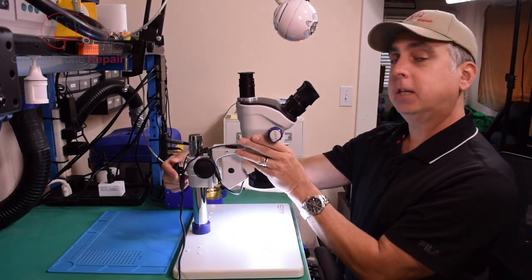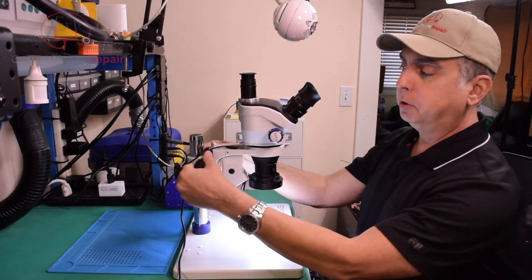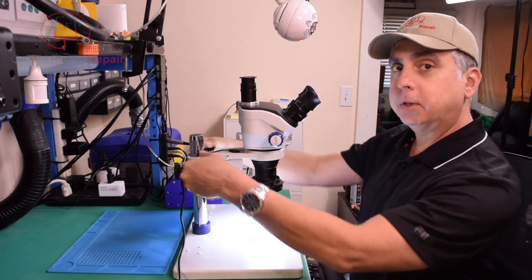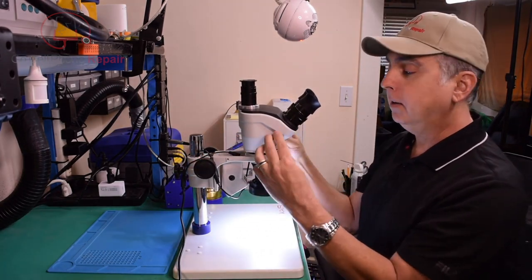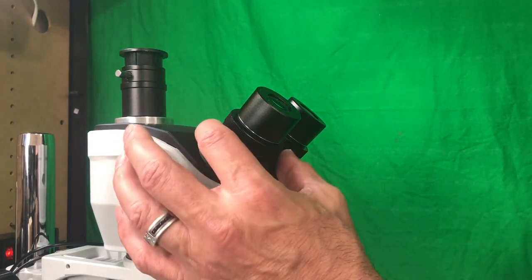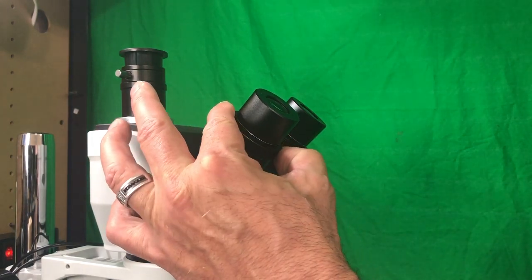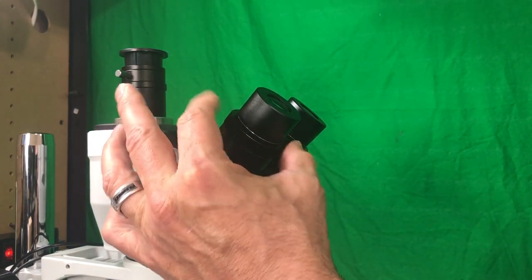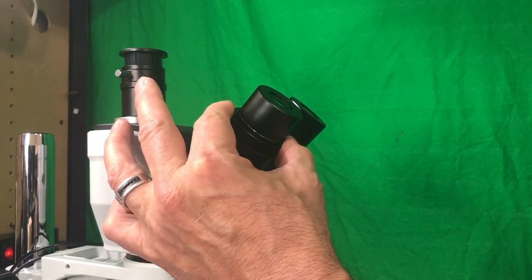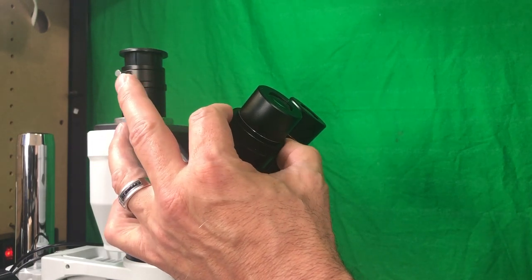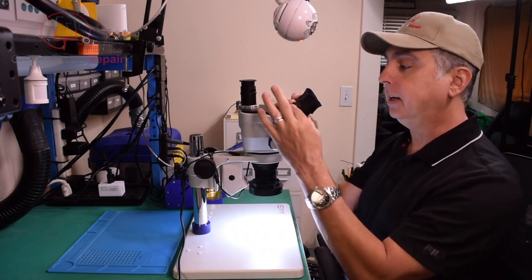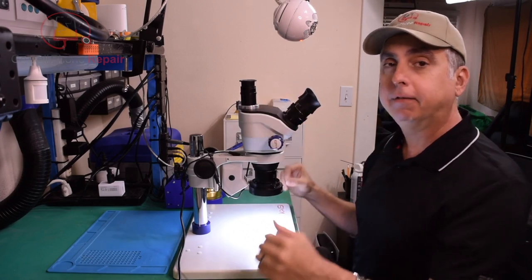Now, once you have that adjusted properly and you've tuned in your main focus, which is right back here, you've got your zoom right here. And then you can individually focus either one of these eyepieces. So if you have a slightly different vision or if you have a different prescription for your glasses, one eye to the other, it's easy to compensate for that right here and make everything get nice and focused.